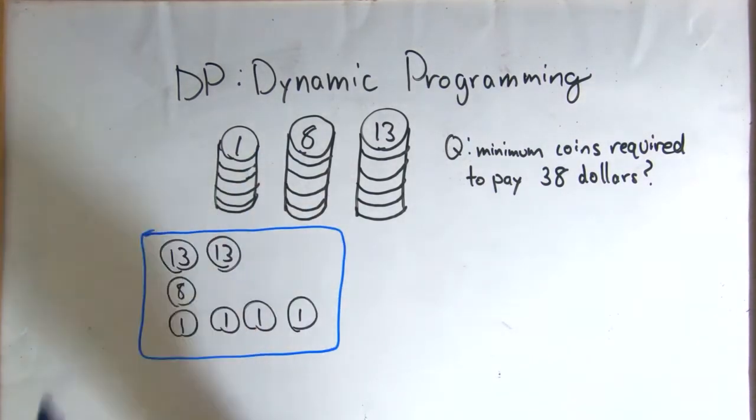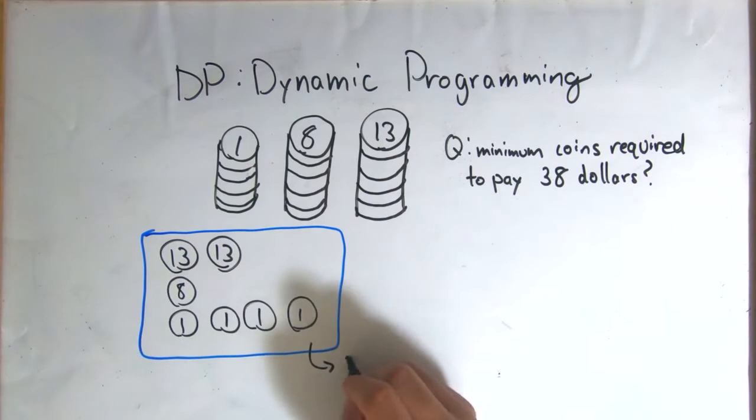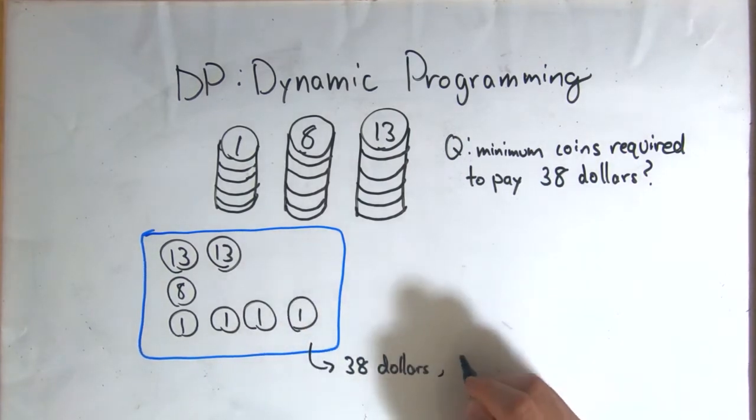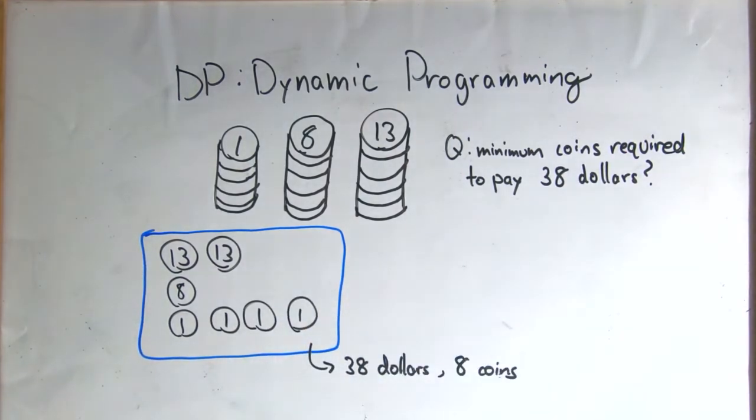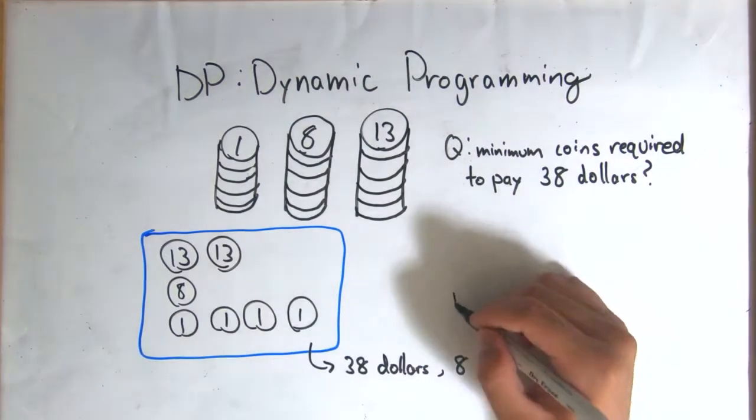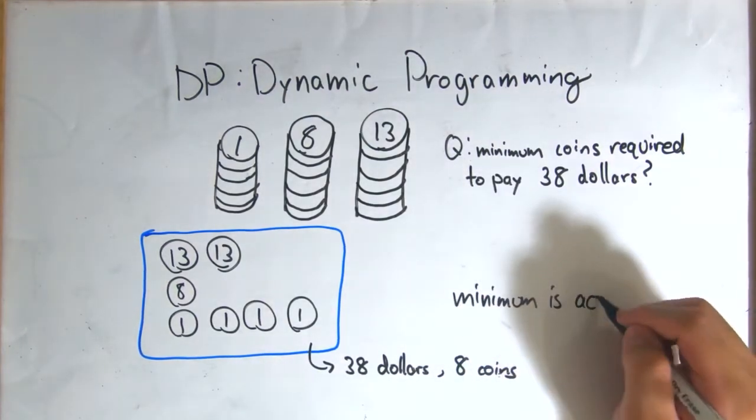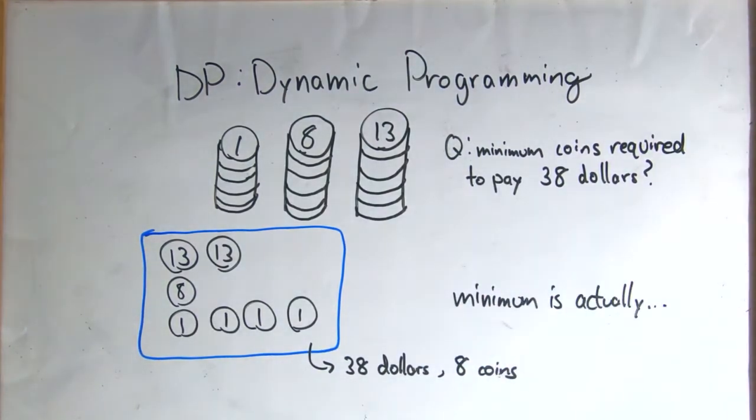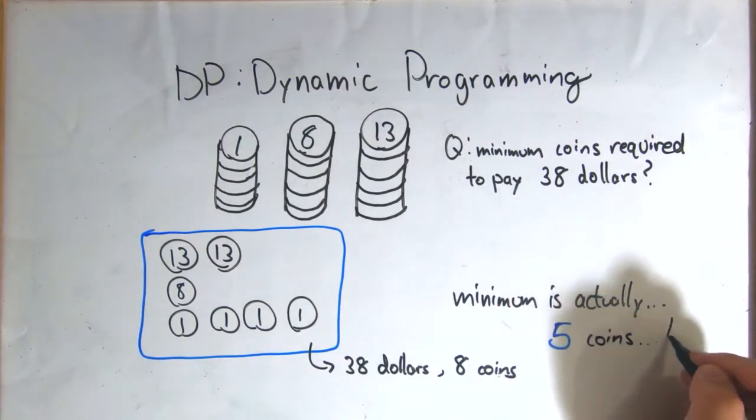That is, while using two $13 coins, and then one $8 coin, followed by four $1 coins, does indeed add to $38, it requires a total of 8 coins to accomplish, where in reality, you only need 5 coins.